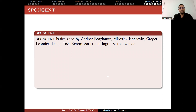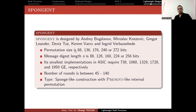The second standard is Spongent, designed by Andrei Bogdanov, Miroslav Knežević, Gregor Leander, Dennis Toz, Karen Varıcı, and Ingrid Verbauwhede. It has permutation sizes larger than the output sizes — for example, hashing codes of length 88 bits (the output is 88 bits but the security is 80 bits). They show the smallest ASIC implementation requires very few gate equivalents. Once the permutation size increases, the internal state grows and you require more gate equivalents.